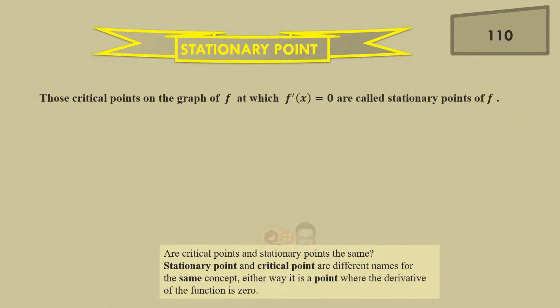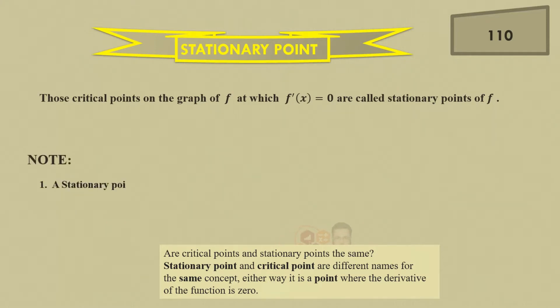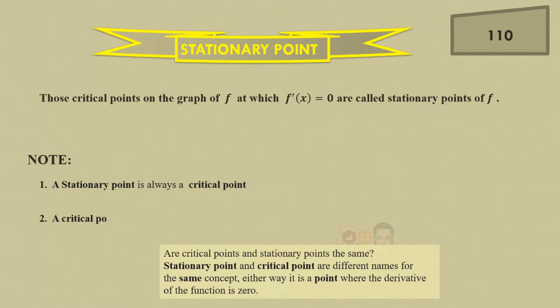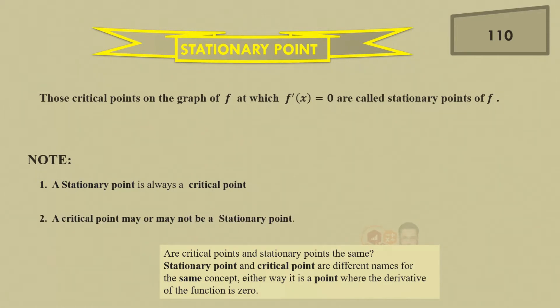Also remember, I mentioned this could come in objectives: a stationary point is always a critical point, but a critical point may or may not be a stationary point.